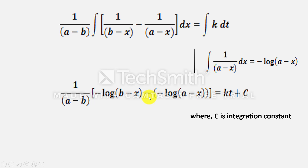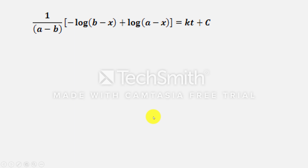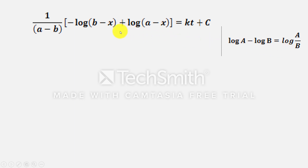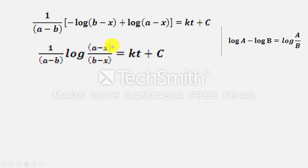Here, minus into minus becomes plus. Using the form log A − log B = log(A/B), the expression log(A−x) − log(B−x) can be written as log[(A−x)/(B−x)]. So the equation becomes: 1/(A−B) × log[(A−x)/(B−x)] = kt + C. Let this be equation 1.